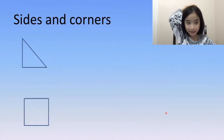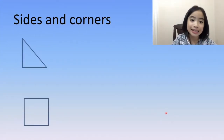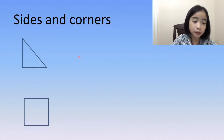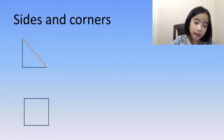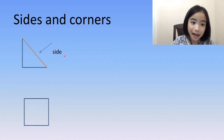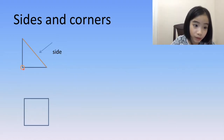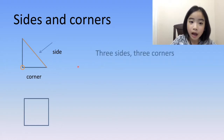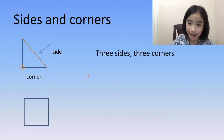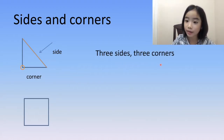Now, let's look at sides and corners. First, let's look at the triangle. Look at this straight line over here marked with orange pen — this is called a side. And down here is a corner. A triangle has three sides and three corners.